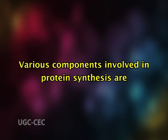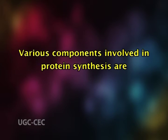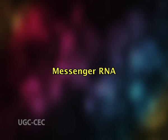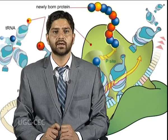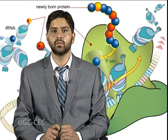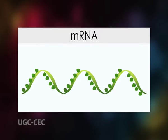The various components involved in protein synthesis are: the mRNA to be translated, the tRNA, the aminoacyl tRNA synthetase enzyme, and the two ribosomal subunits — small and large. Number one: messenger RNA. Messenger RNA is a large family of RNA molecules that convey genetic information from DNA to the ribosome, where they specify the amino acid sequence of the protein product of gene expression.